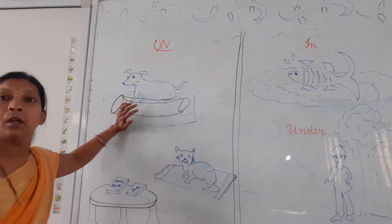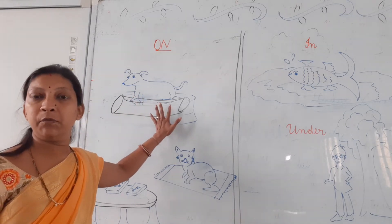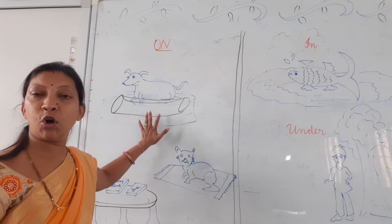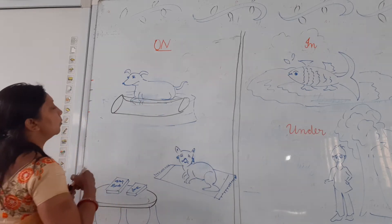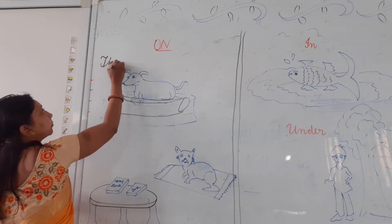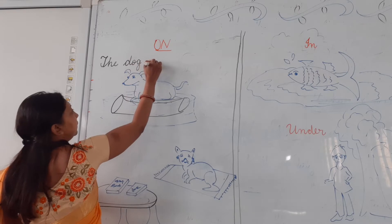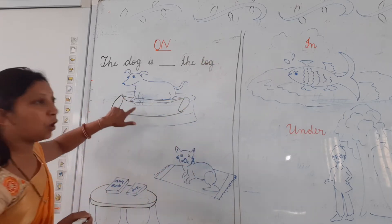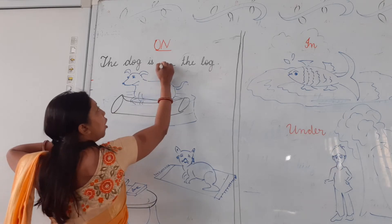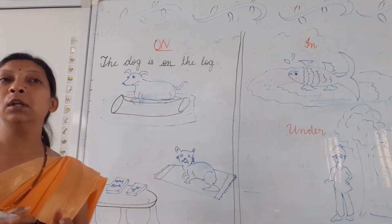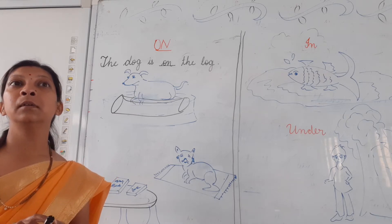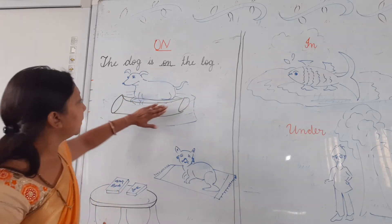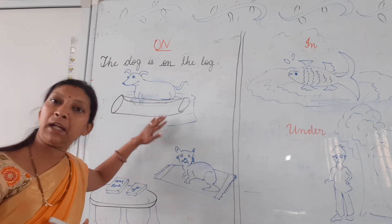Can you see this dog? Can you see this goat? Now, where is the goat? The goat is on the log. The dog is on the log. Where is the dog? On the log — log ke oopar, ya na?